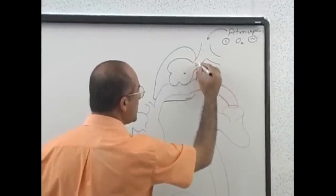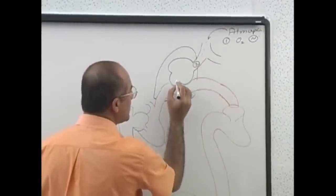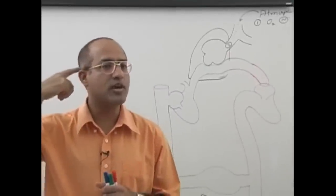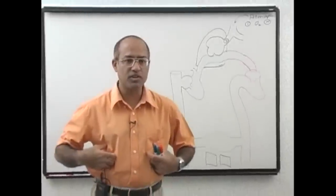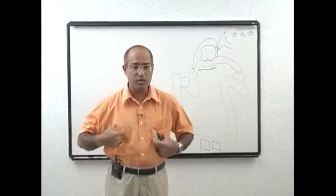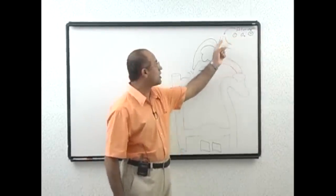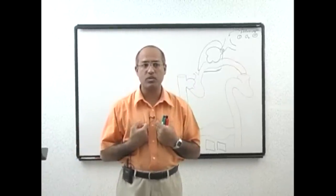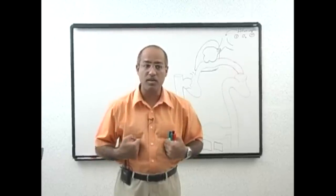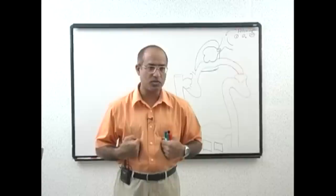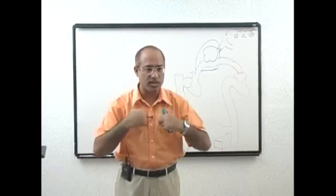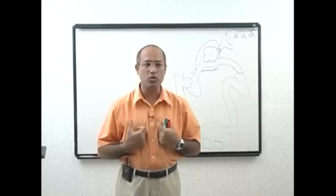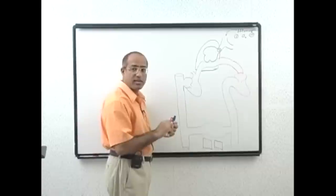Number three: the ventilatory process must be normal. The central nervous system drives the muscles for inspiration, and that neuromuscular apparatus must be functioning. There is no benefit in having enough oxygen in the air and open airways if your respiratory pump is not working. During inspiration and expiration, the lungs must change their size, and that function is provided by the neuromuscular system — this is the respiratory pump.